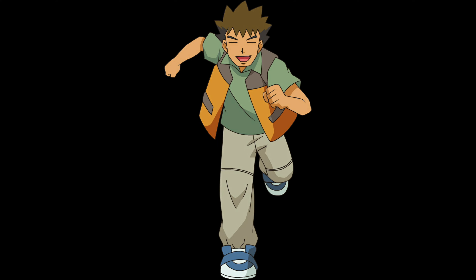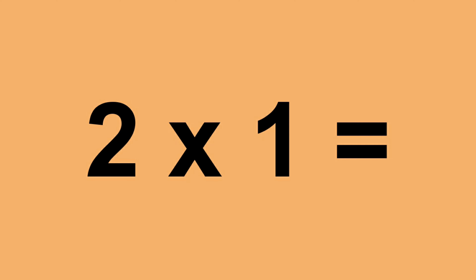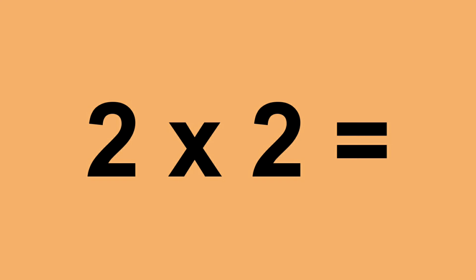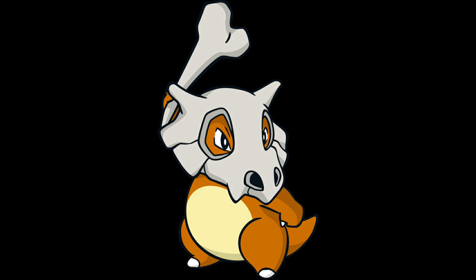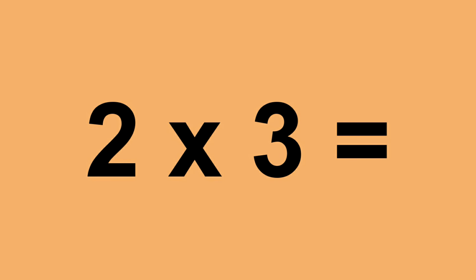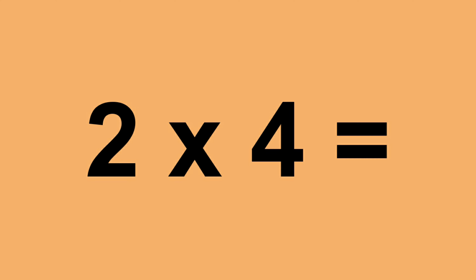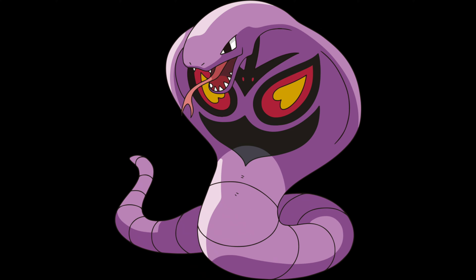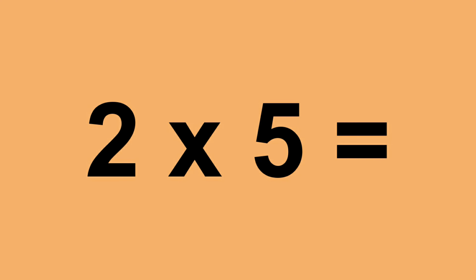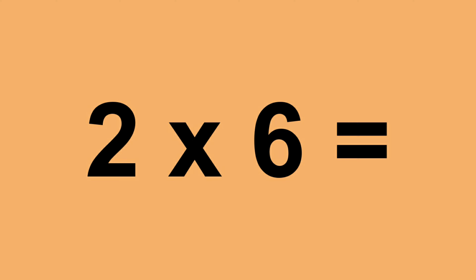Two times zero equals zero. Two times one equals two. Two times two equals four. Two times three equals six. Two times four equals eight. Two times five equals ten. Two times six equals twelve.